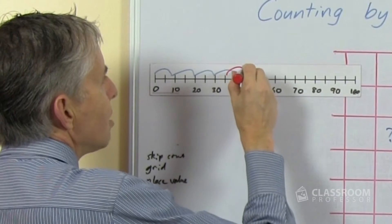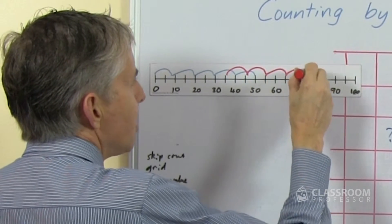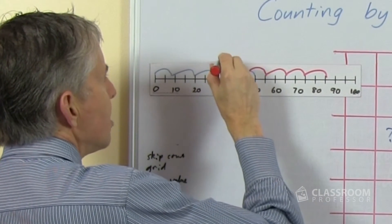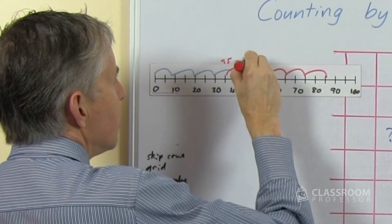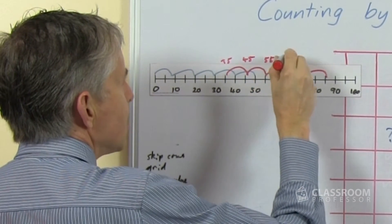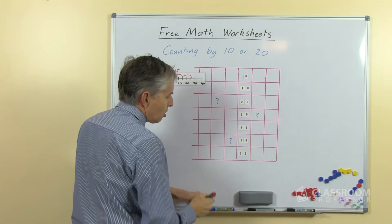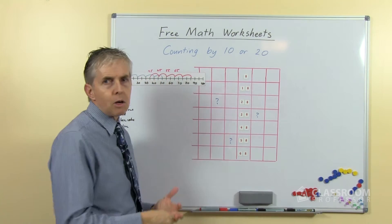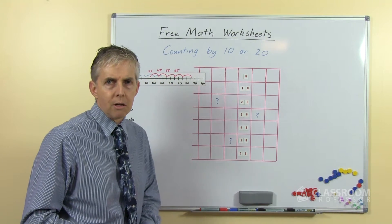So we could perhaps say what pattern is this, what is this sequence of numbers, what do we know about it? So we'd have 35 and 45 and 55 and 65, and so there are other questions, other activities that you could do with a number line.